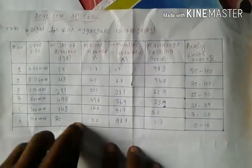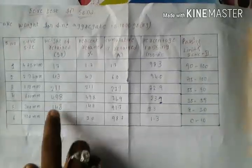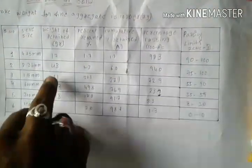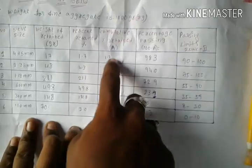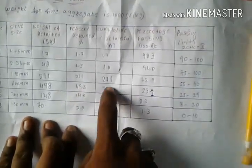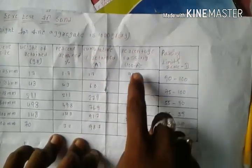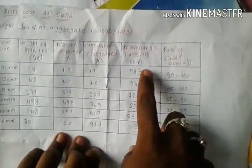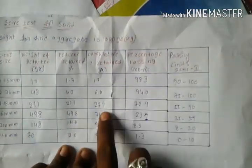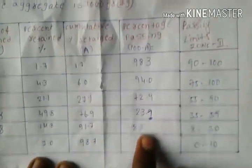Now let's calculate the cumulative percentage of retained and percentage of passing. Percentage passing = 100 minus cumulative percentage of retained. So: 100 minus 1.7 equals 98.3; 100 minus 6.0 equals 94.0; 100 minus 27.1 equals 72.9.